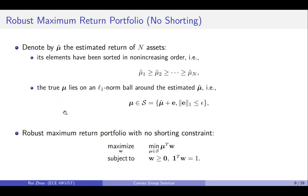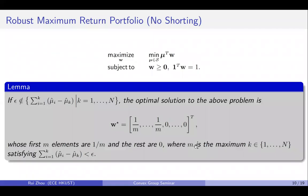The size of this L1 norm ball is measured by a parameter called epsilon. So technically, we can write down the robust maximal return portfolio with non-shorting constraints like this. We want to maximize the worst-case return of our portfolio, subject to a non-shorting constraint. We also prove that the optimal solution to this problem is given like this. Its first m elements are equally weighted and the rest are zero.